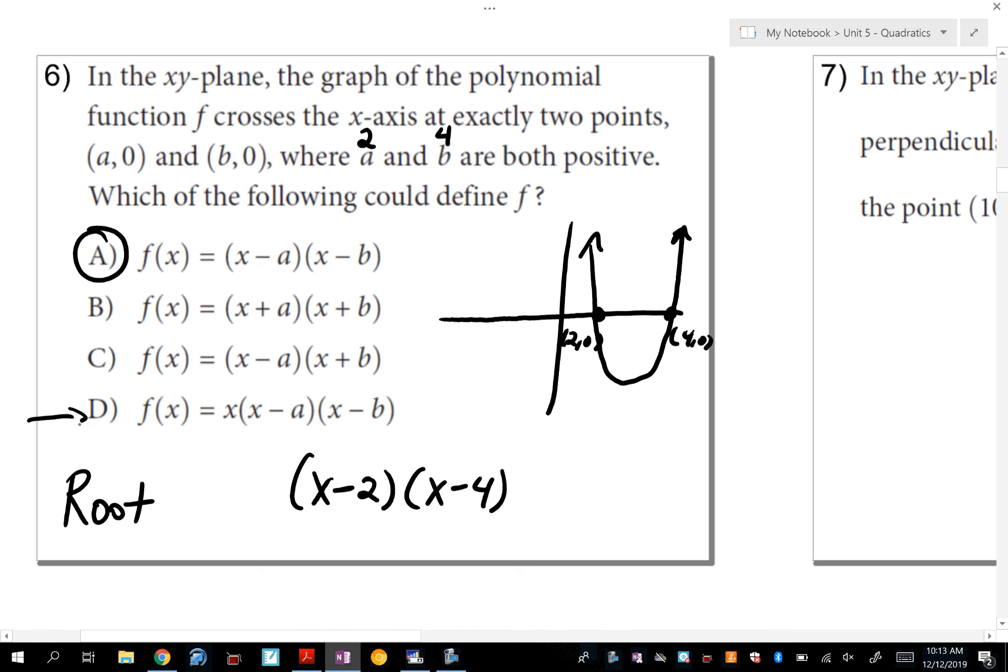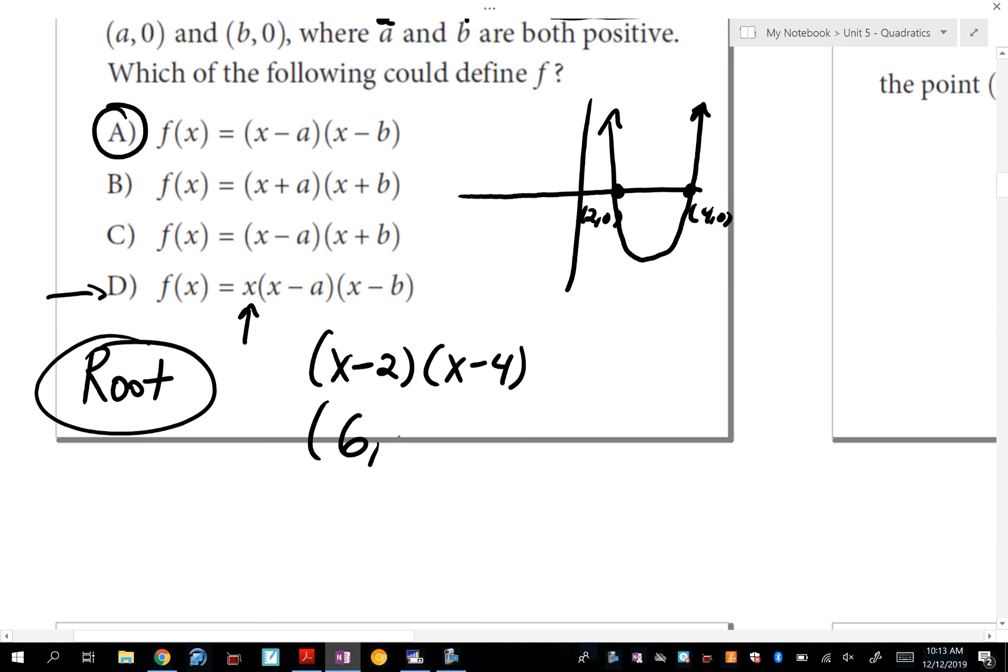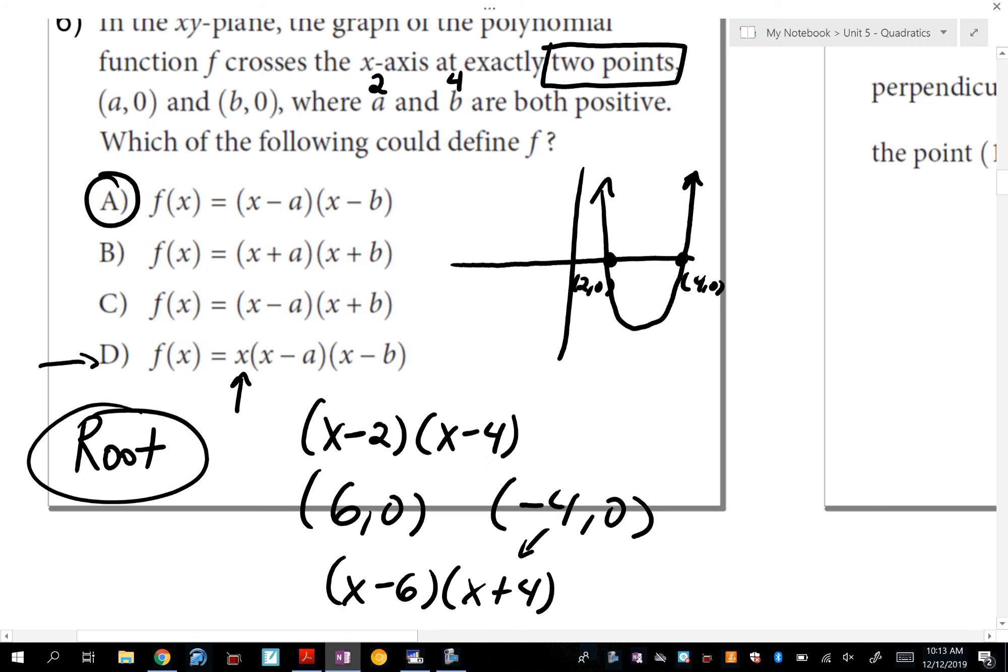And the reason it's not D is because that extra x means that there's going to be a third x-intercept or root, which is not happening here because it says there are exactly two points. So what you should hopefully learn from this problem is that in root form, it's always going to be opposite. Think opposite when you write that. So if you were doing a problem that says the roots are 6, 0, and negative 4, 0, your root form is going to be x minus 6 times x plus 4. You have to think opposite when you write down the factors, the root form. So that's number 6.